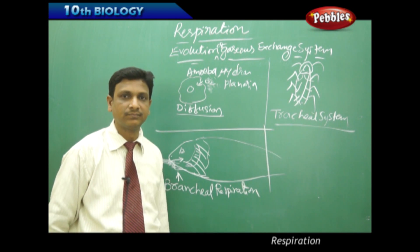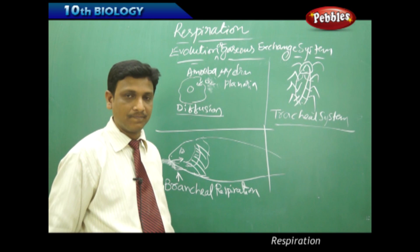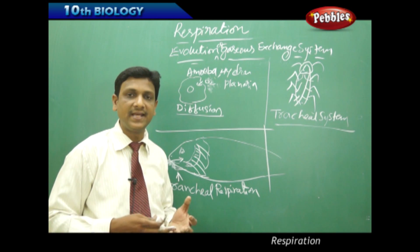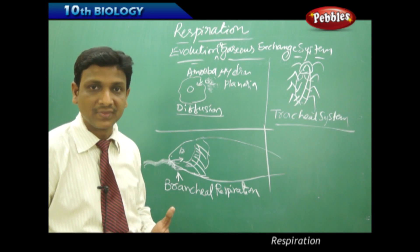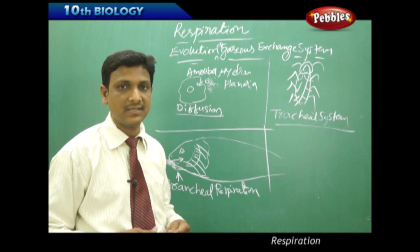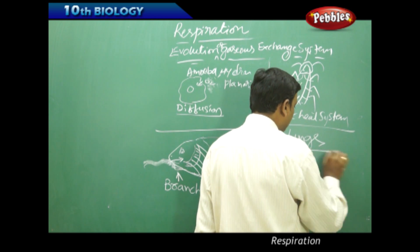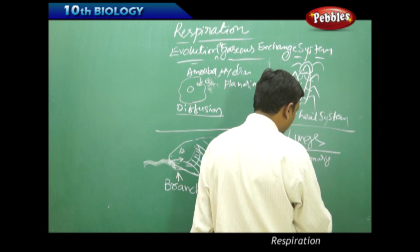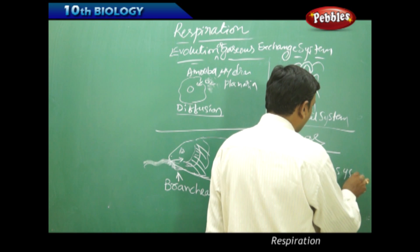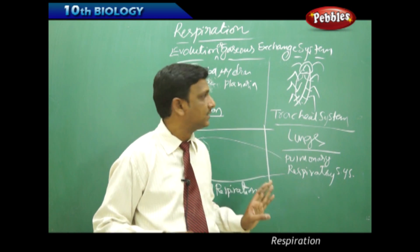So far we have seen diffusion, the tracheal system, and the branchial system. The next higher animals are reptiles like snakes, lizards, and tortoises, and other animals like mammals and birds. All these higher animals have lungs to breathe air. We call this system the pulmonary respiratory system, in which the lungs are the organs for the exchange of gases. Lungs are observed in all higher animals.